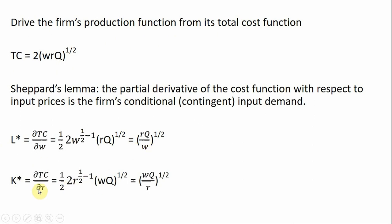Doing a similar thing to get the conditional input demand for capital, taking the partial derivative of the cost equation with respect to R. R is raised to the 1-half power, so we bring that down, then take R raised to the 1-half power and subtract 1, which brings R back into the denominator.